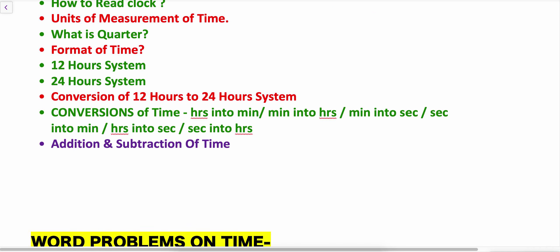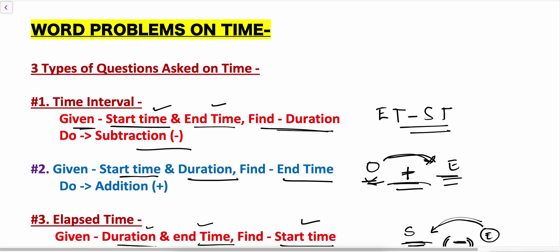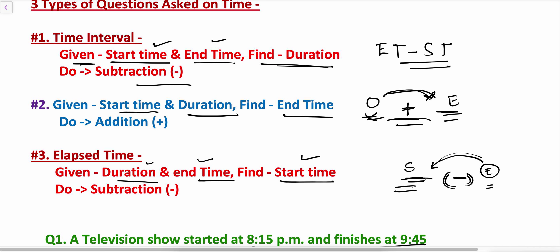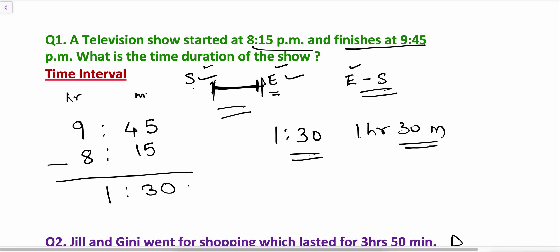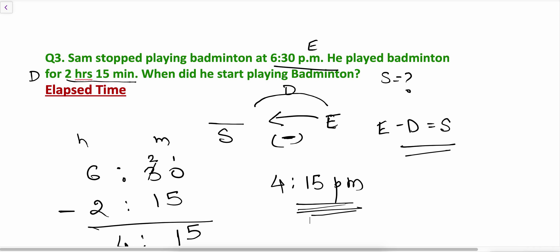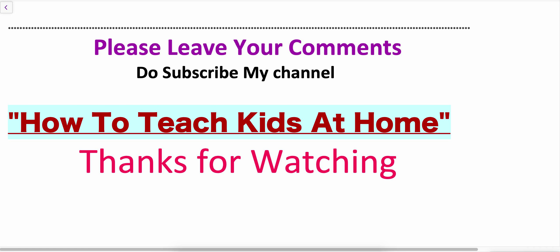So these are the types of word problems asked on time: first, finding the time interval; second, finding the end time; and third, the elapsed time when we need to find the starting time. I hope the word problems on time are clear to you. If you like my video, subscribe to my channel 'How to Teach Kids at Home.' Thanks for watching.